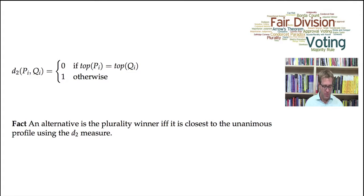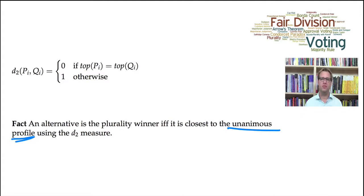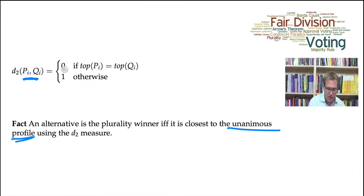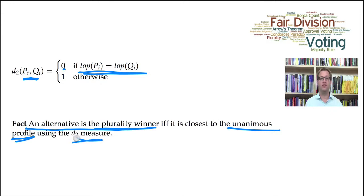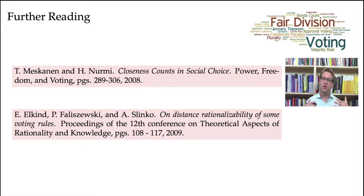We can apply this idea to other voting methods. If we use the same notion of consensus — unanimous top choice — but change the notion of distance to a discrete distance (where the distance between ranking P_i and Q_i is 0 if they agree on the top-ranked element, and 1 otherwise), then an alternative is the plurality winner if and only if it is closest to the unanimous profile using this measure. In fact, we can keep going: by looking at many different notions of consensus and different notions of distance, we can characterize many different voting methods.